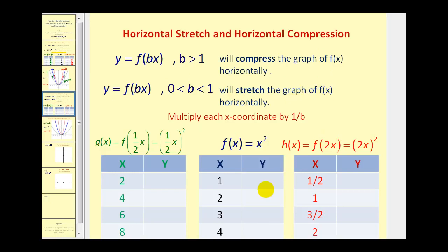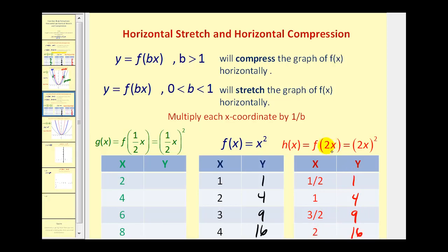Let's compare t-tables for f of x, f of two x, and f of one half x. We already know the y values are one, four, nine, and sixteen. For f of two x, we multiply x by two and then square it. If x is one half, two times one half squared is one; two times one squared is four; two times three halves squared is nine; and two times two squared is sixteen. When b equals two, we leave the y coordinates the same and multiply the original x coordinates by one over b, or divide by b.